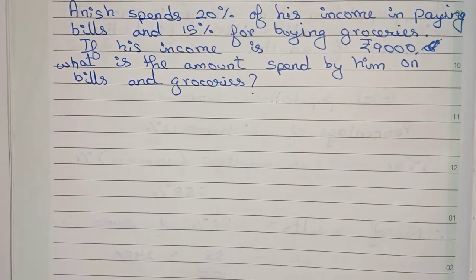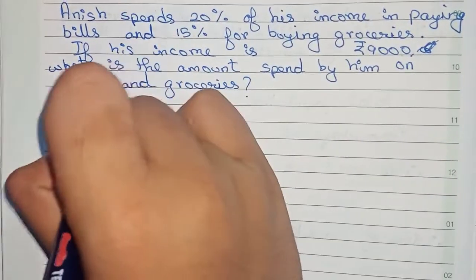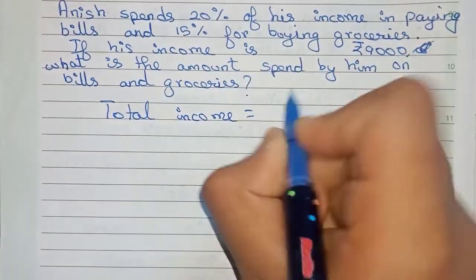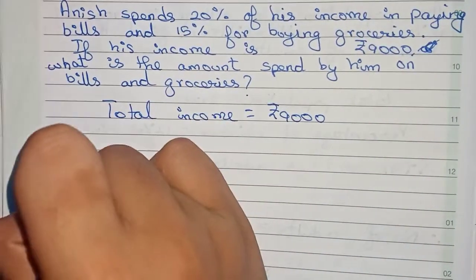So this is our question. Now let's solve this. First, your total income equals to, so total income of Anis, that is equal to rupees 9,000. Now you have a percentage of amount of bills equals to, it is given 20%.